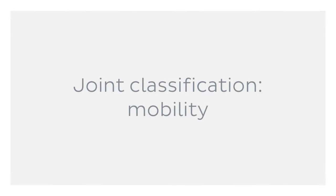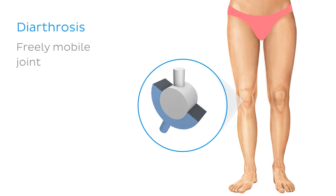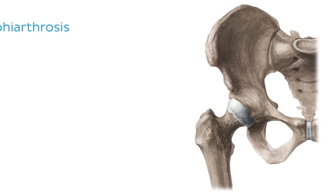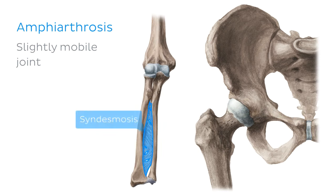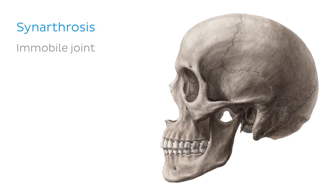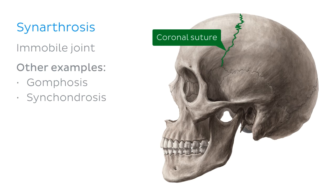Time to move on to our next mode of classification, which is mobility. A diarthrosis is a freely mobile joint, and an example of this is the knee joint, which is a synovial hinge joint. It's worth noting that every synovial joint is a diarthrosis. An amphiarthrosis is a slightly mobile joint, and an example of this is the pubic symphysis, which is a secondary cartilaginous joint. The syndesmosis, which is a fibrous joint, is also an example of an amphiarthrosis. Lastly, we have a synarthrosis, which is an immobile joint, and an example of this is the coronal suture of the skull. Other examples include the gomphosis, which is a fibrous joint, and the synchondrosis, which is a primary cartilaginous joint.